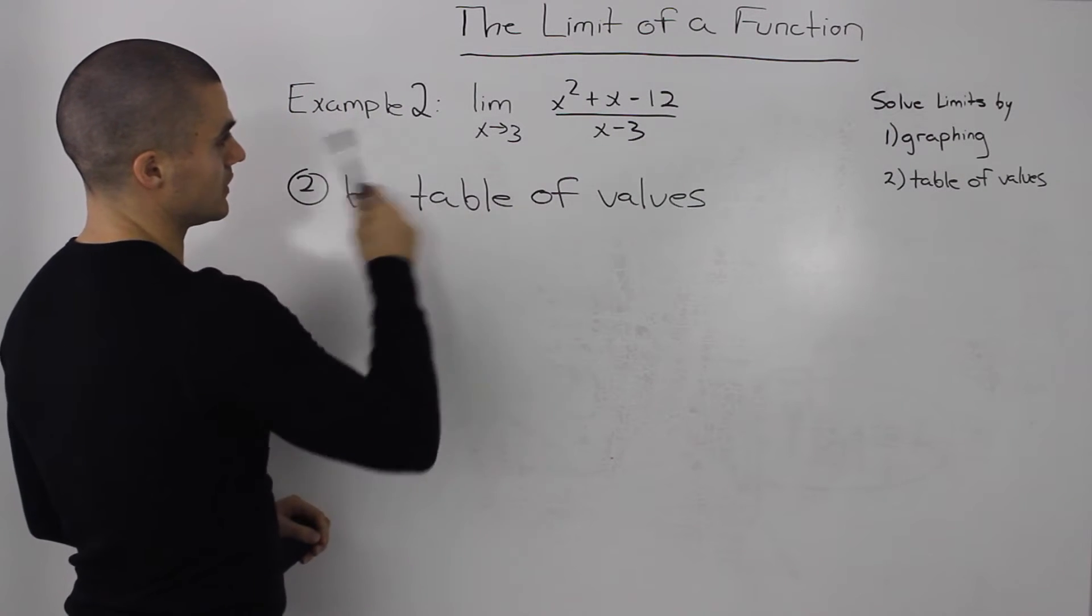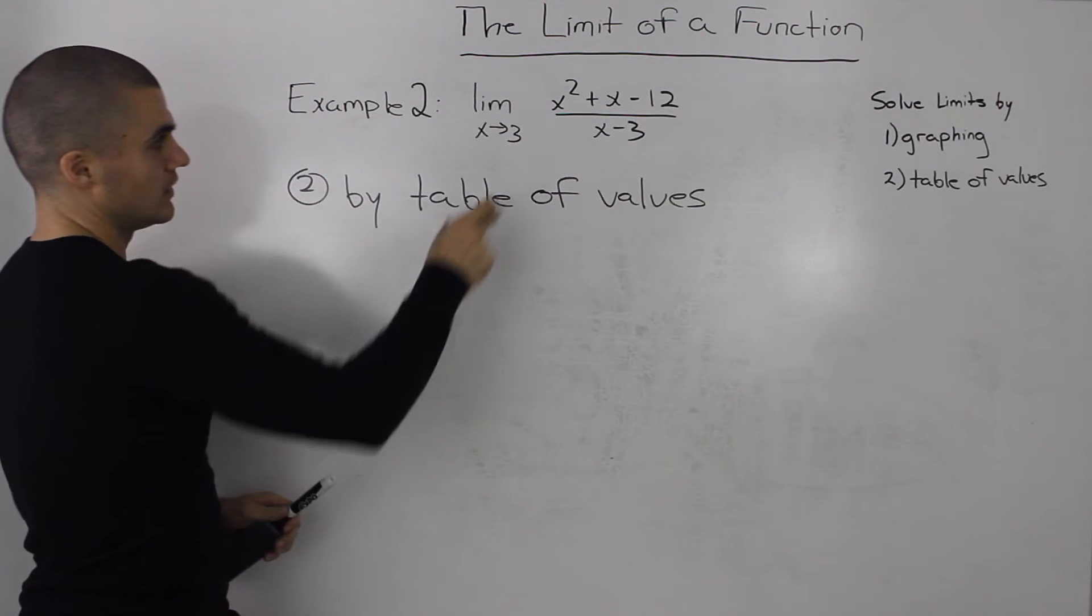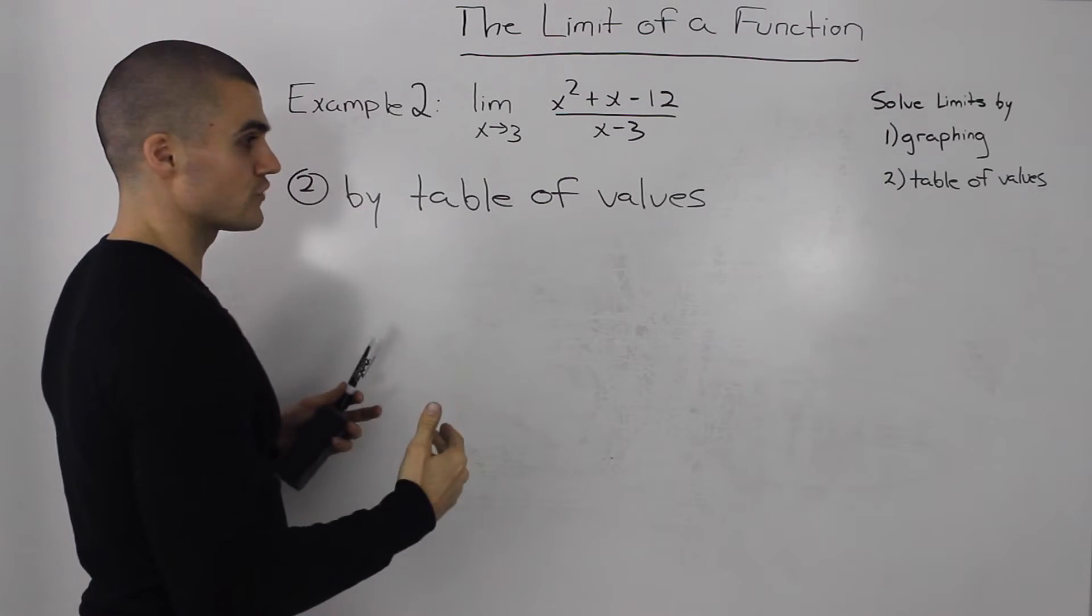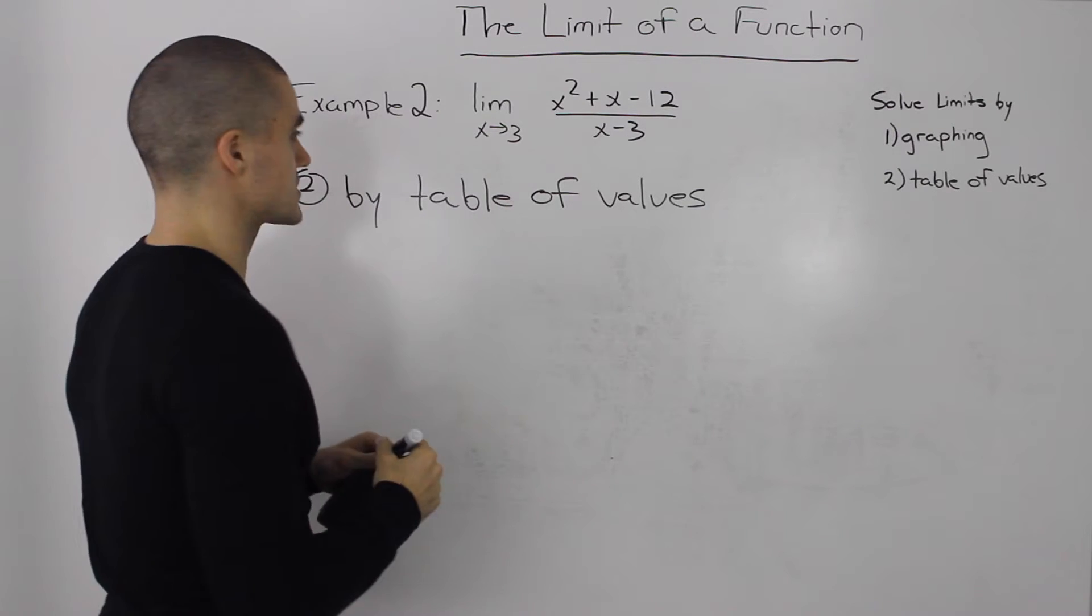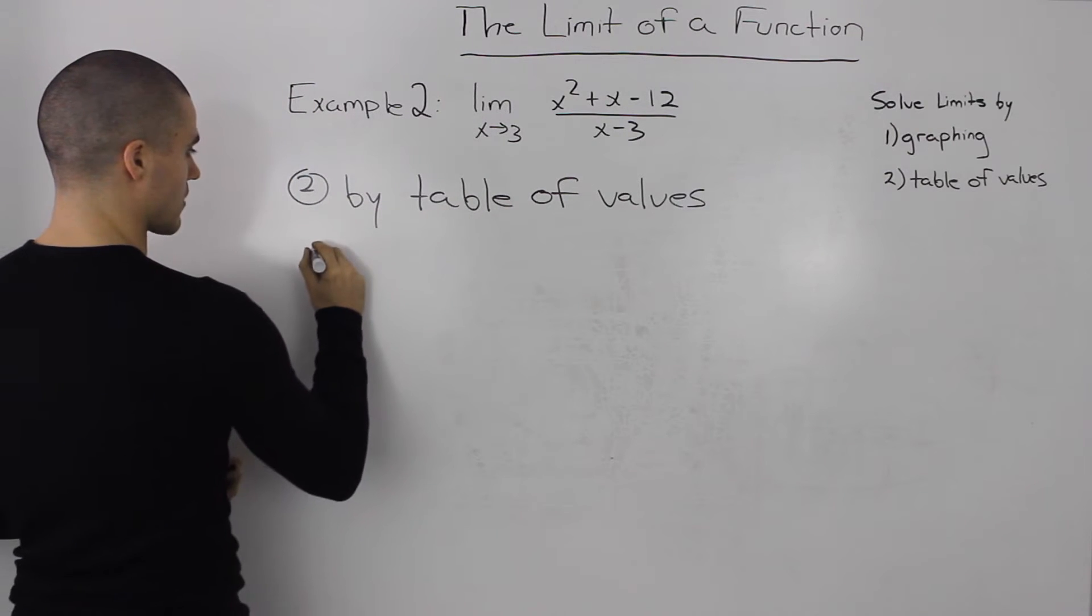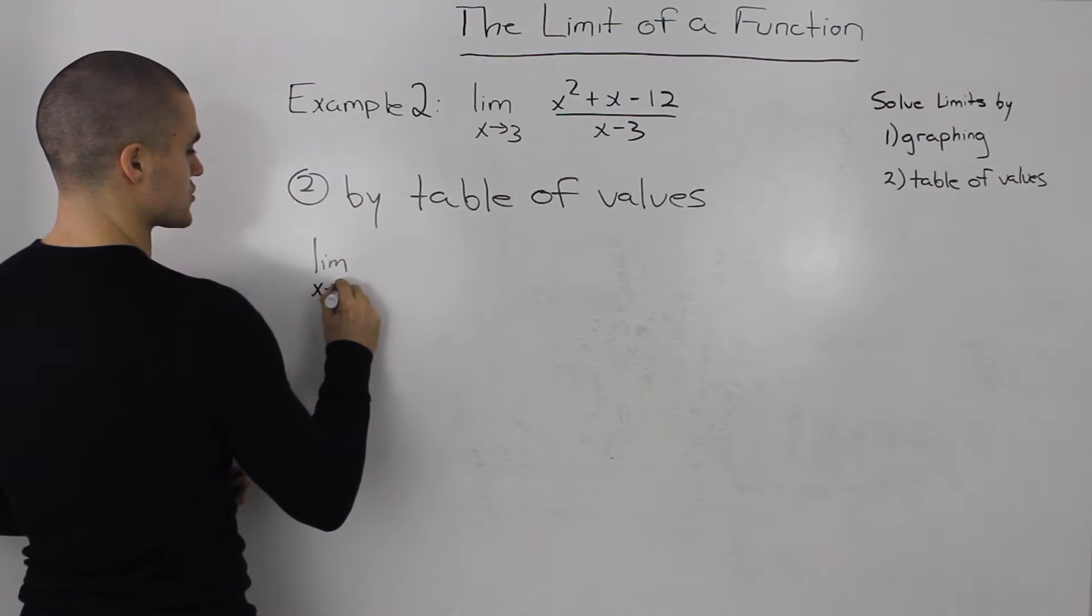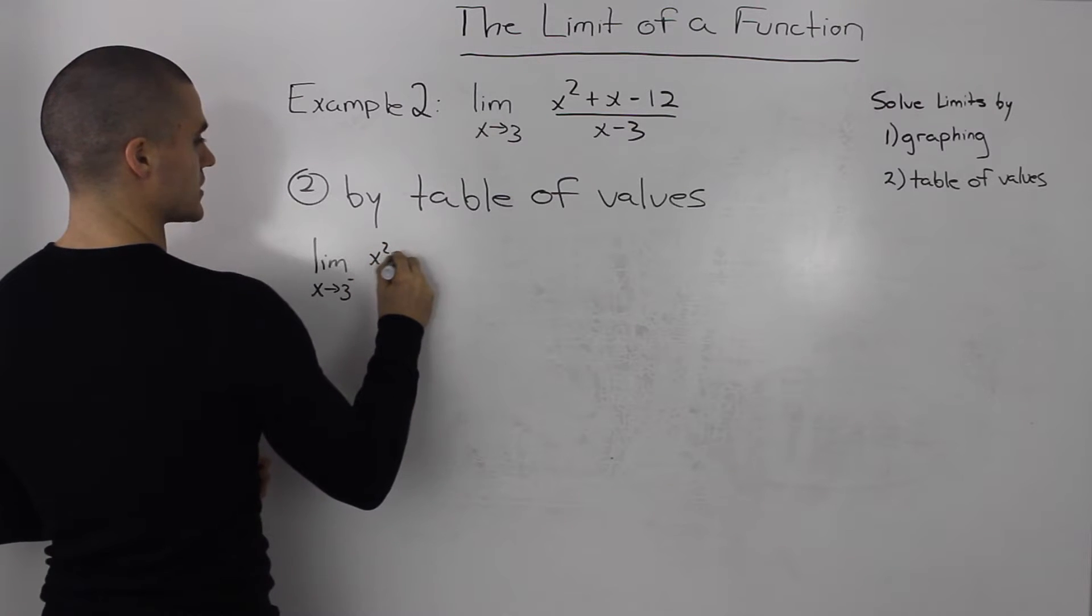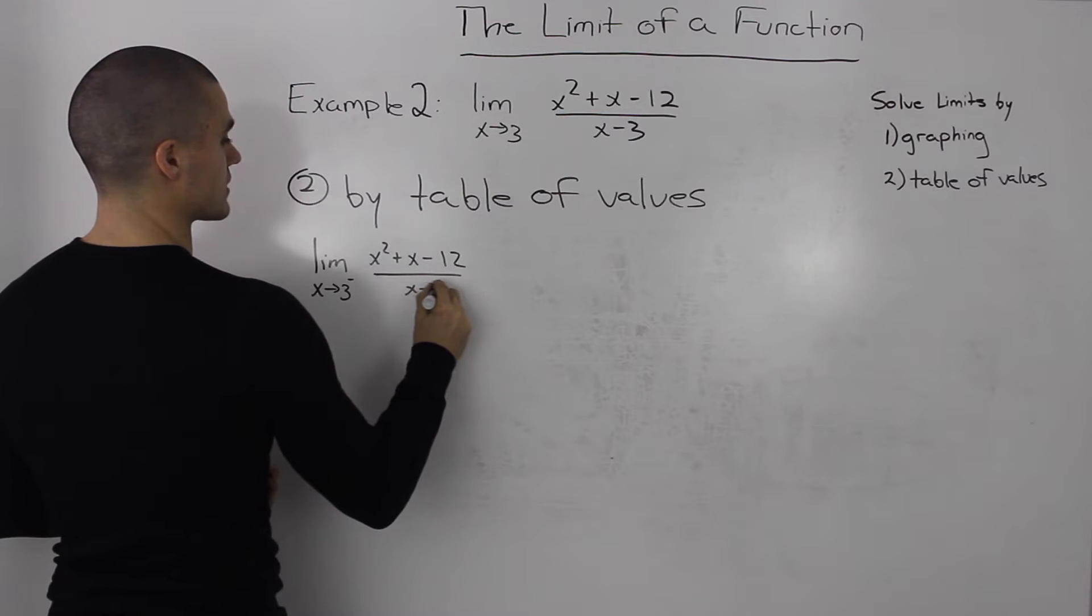The limit as x approaches 3 of (x² + x - 12)/(x - 3). To prove that a limit exists, we first have to prove that it exists from both sides and equals the same value from both sides. Let's start by finding the limit as x approaches 3 from the left side of this function.